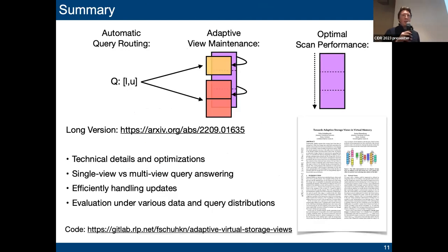So in summary, we perform adaptive view maintenance. We create these adaptive virtual views and perform automatic query routing, and then when you're at your view you can basically do a flat scan on the view, which is quite optimal. If you're interested in all the technical details, there's a long version of this already available in arXiv that also covers things like how to handle updates on these views, and of course how well does it perform under different data distributions and query patterns. If you want to try it out, the code is also available. Thanks for your attention and I'm looking forward to your questions.